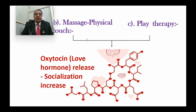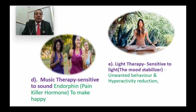Massage or physical touch releases oxytocin — the love hormone — and helps in socialization. Play therapy is also helpful by releasing oxytocin and aiding socialization. Music therapy is helpful because children are sensitive to sound; it releases endorphins — a painkiller hormone — to make them happy. Light therapy is also helpful as children are sensitive to light; it stabilizes mood, reduces unwanted behavior and hyperactivity.